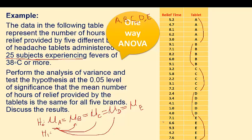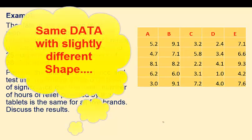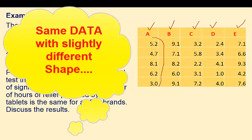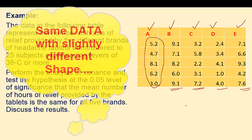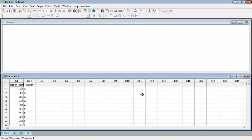We can see the same data in a different format. The example is the same but the data is in a different shape. We have written the tablets in different columns, and these are the five patients who have been given tablet A. Similarly, these five received tablet B, these five tablet C, and the last five got tablet E.